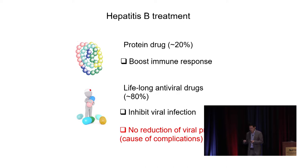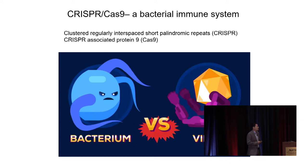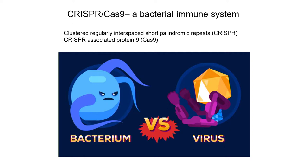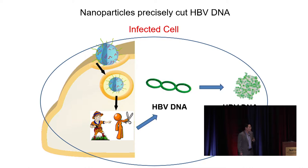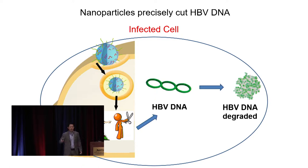We decided to learn from nature. The CRISPR system is an immune system for bacteria — when a virus invades, bacteria trigger CRISPR to counteract viral infection. The rationale is: if we encapsulate the CRISPR system into our nanoparticles, they deliver Cas9 and guide RNA into infected cells, identify the HBV DNA, and induce gene cutting. The HBV DNA then undergoes mutagenesis or is degraded and becomes nonfunctional.